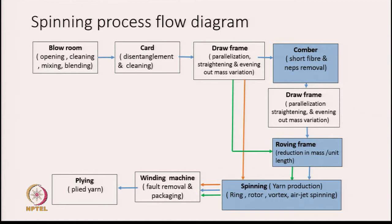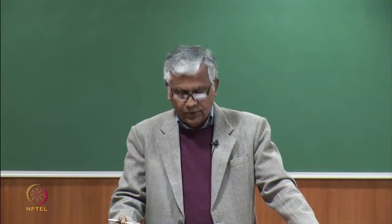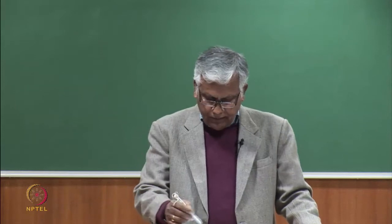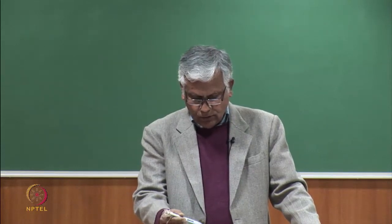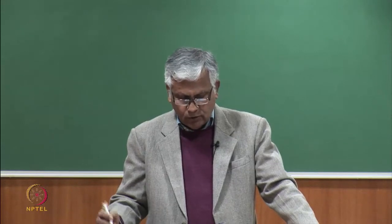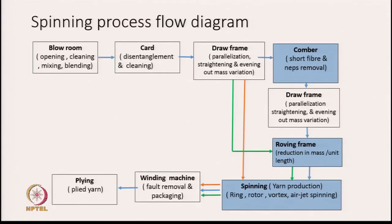From the draw frame, the next process could be combing. The combing machine will basically remove the short fibers and neps from the sliver. So the main purpose of combing is to get rid of short fibers. Then after the combing process, we go to the draw frame again because the combed sliver is not really uniform, so we have to repeat the draw frame. Then we go to the rubbing frame, and then it goes to the spinning machine where we spin the yarn.